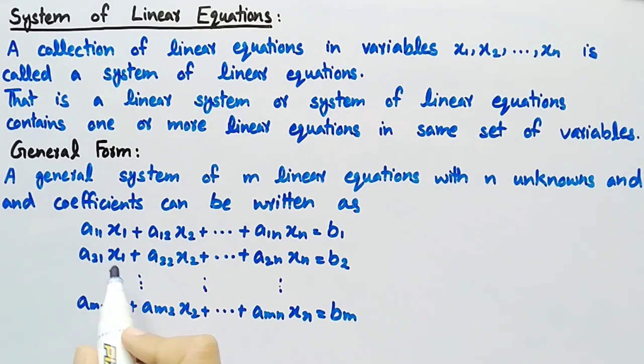a11x1 plus a12x2 plus up to a1nxn equal to b1, a21x1 plus a22x2 plus up to a2nxn equal to b2, and so on, am1x1 plus am2x2 plus up to amnxn equal to bm.